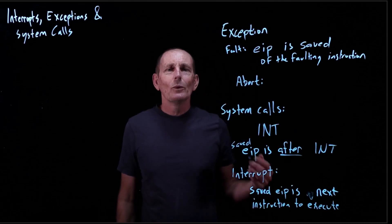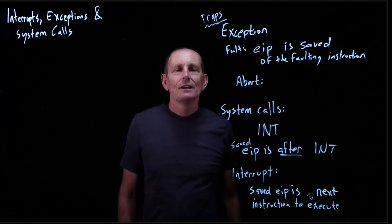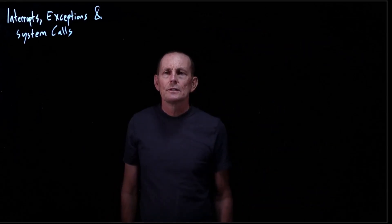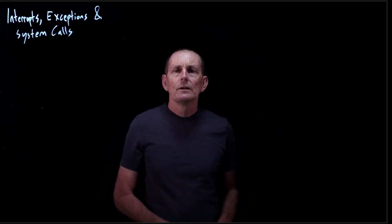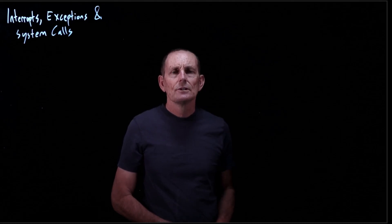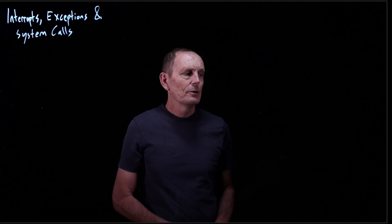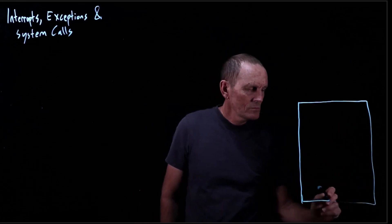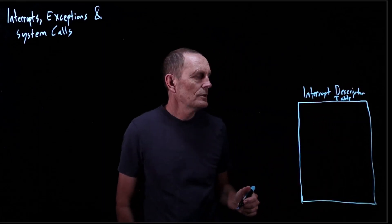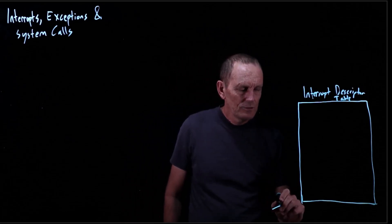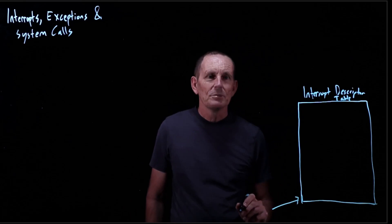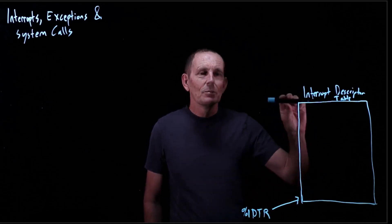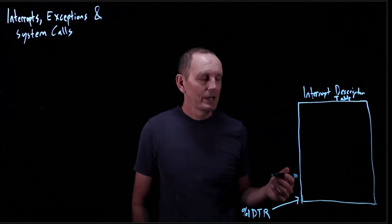These are the three basic types, and we can call them all traps. Exceptions, system calls, and interrupts are all kinds of traps. What happens when a trap occurs? The hardware is going to go to a known location to execute and also switch into kernel mode. There's an interrupt descriptor table, referred to by the interrupt descriptor table register, which points to the beginning of the descriptor table. There's a bunch of indexes in it, one for every different kind of trap.